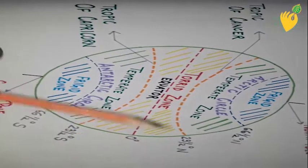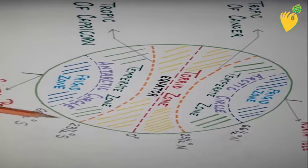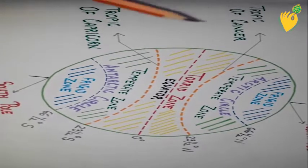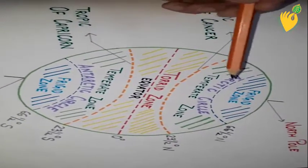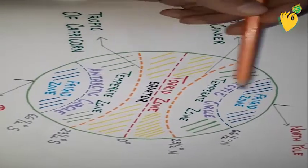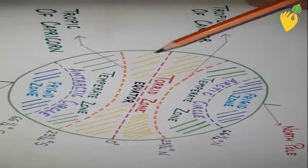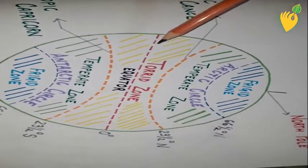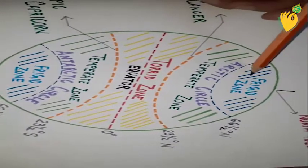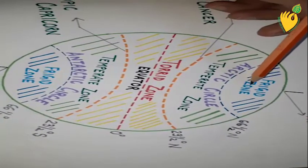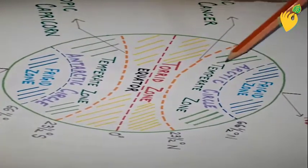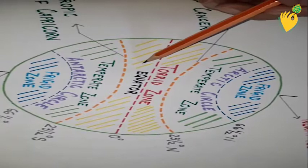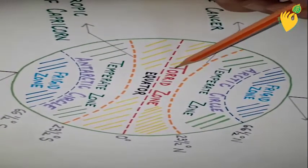Now let's move ahead to the different heat zones. The earth is divided into three main heat zones — regions divided on the basis of the sunlight they receive. Blue is used for the cold regions of the frigid zone, green for the moderate temperate zones, and yellow for the hottest zones.